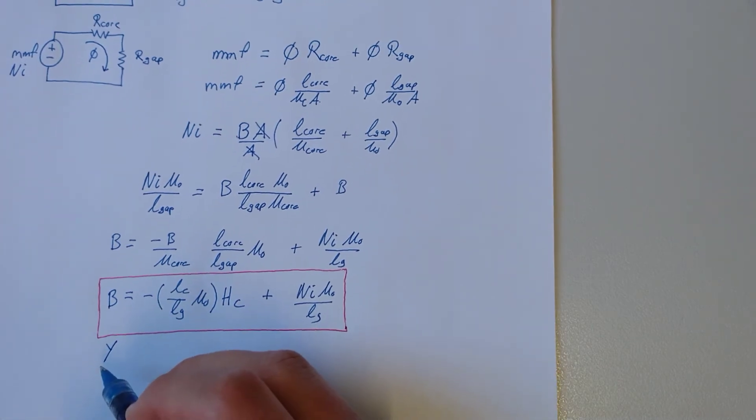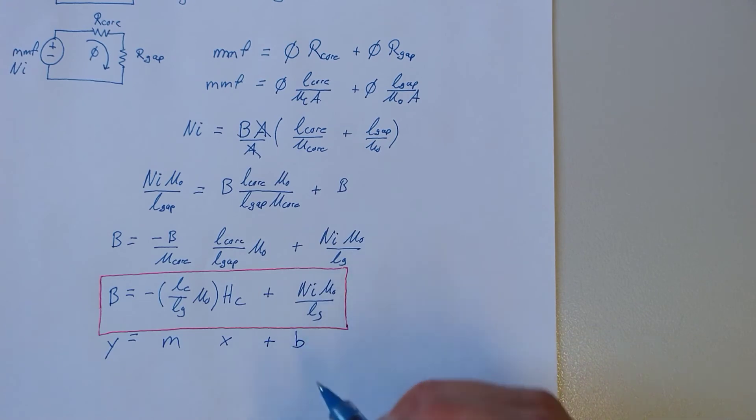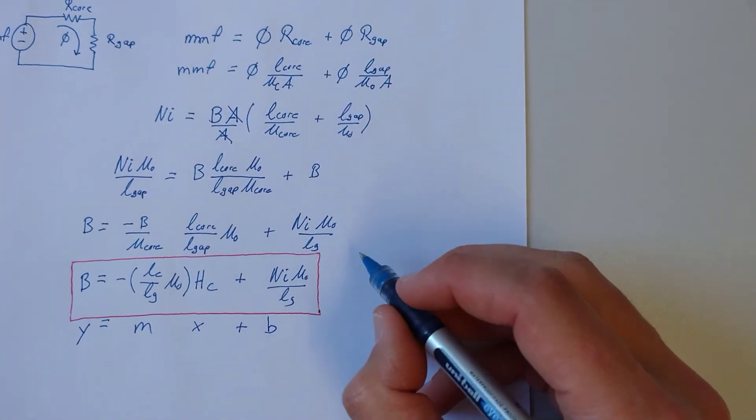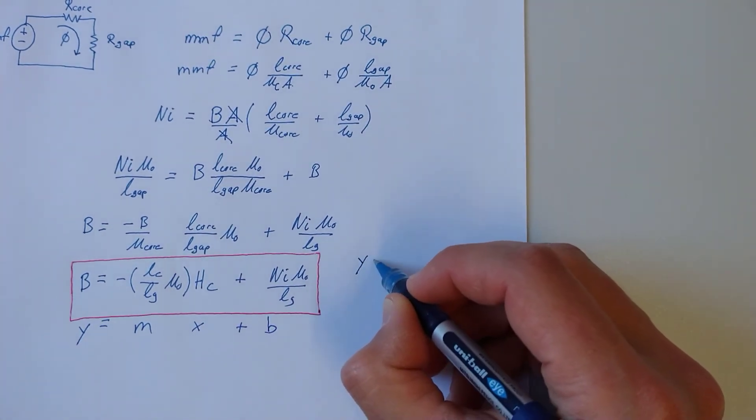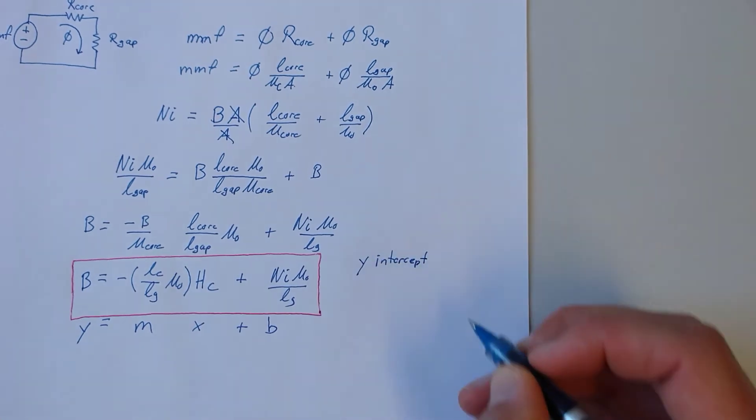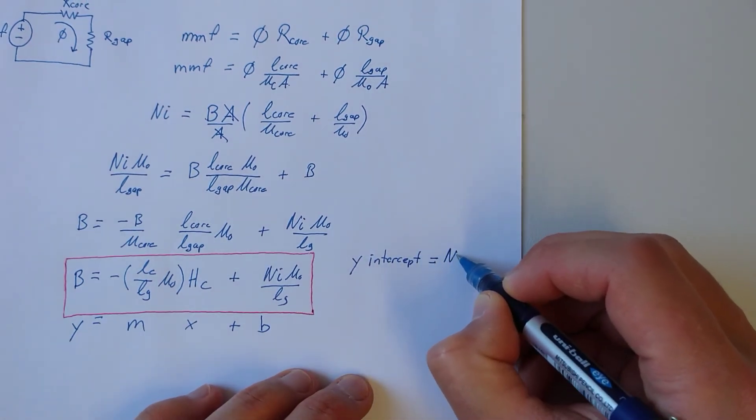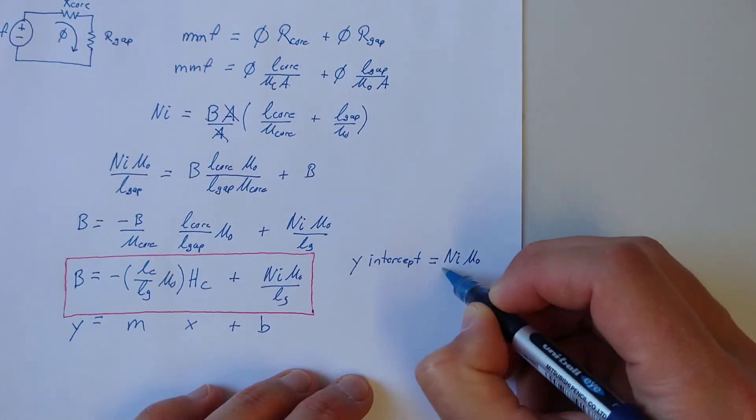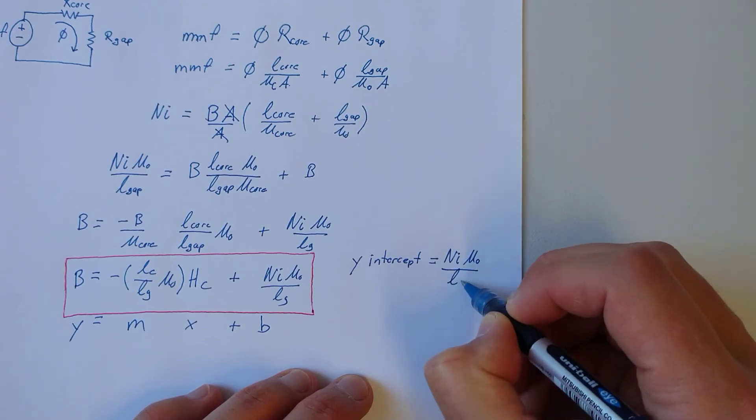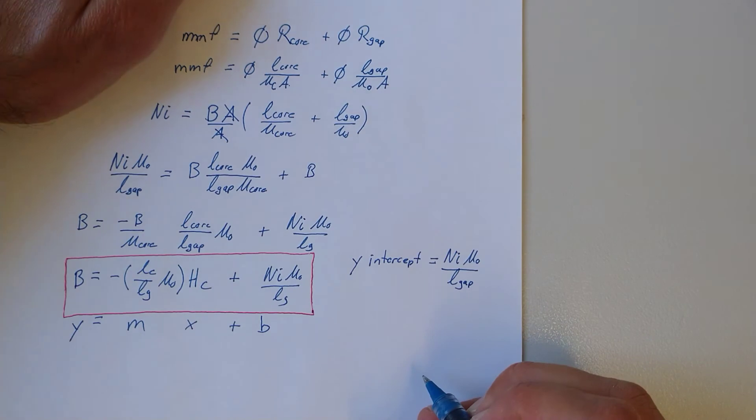The y-intercept when H is 0 is equal to NI mu naught over the length of the gap. To find the x-intercept, we have to solve for the value of H that returns a 0 value of B.